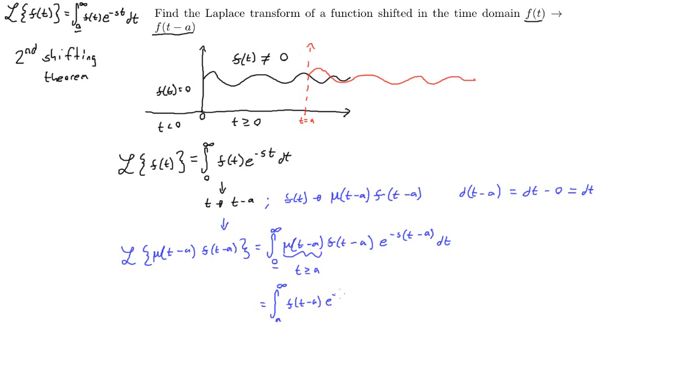So when this is a, this guy becomes one, so then we just have f(t - a)e to the minus s times t times e to the plus a times t dt.